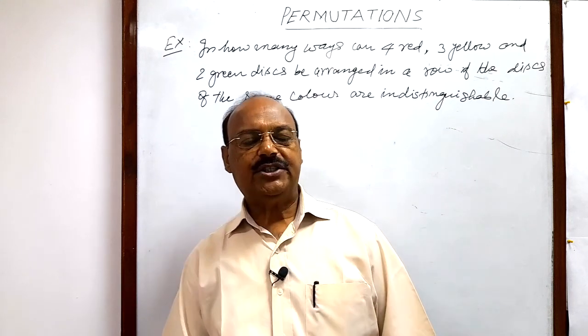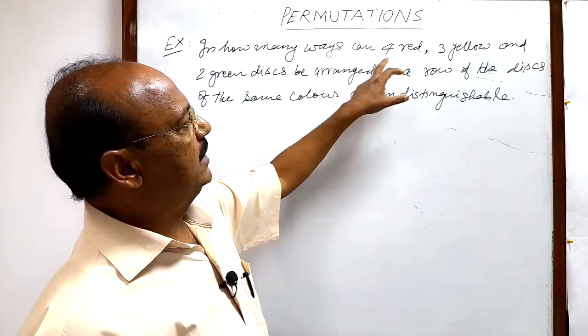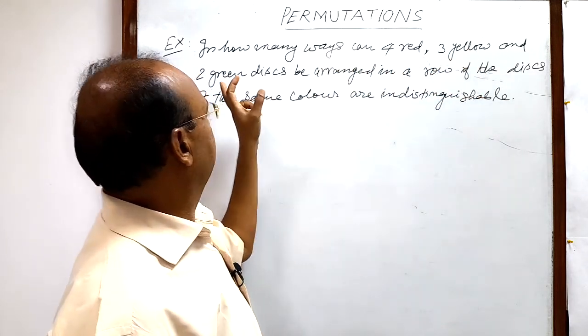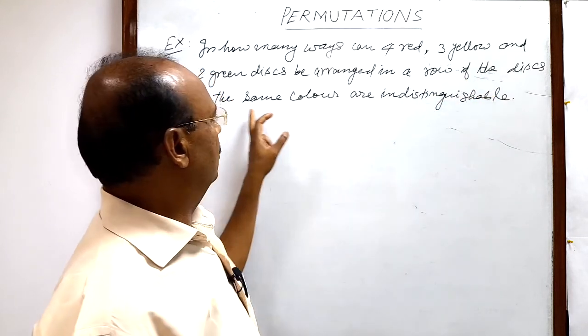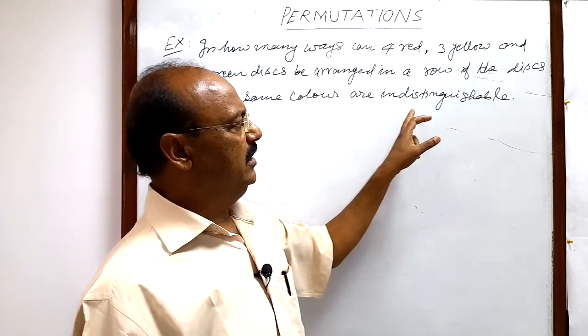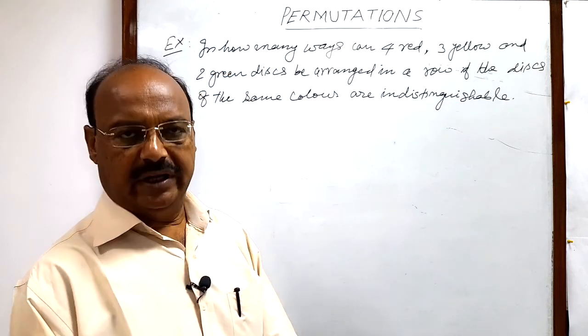Welcome students, let us see a question from the topic permutation. Here the question is: in how many ways can 4 red, 3 yellow, and 2 green disks be arranged in a row if the disks of the same color are indistinguishable? Indistinguishable means exactly similar.